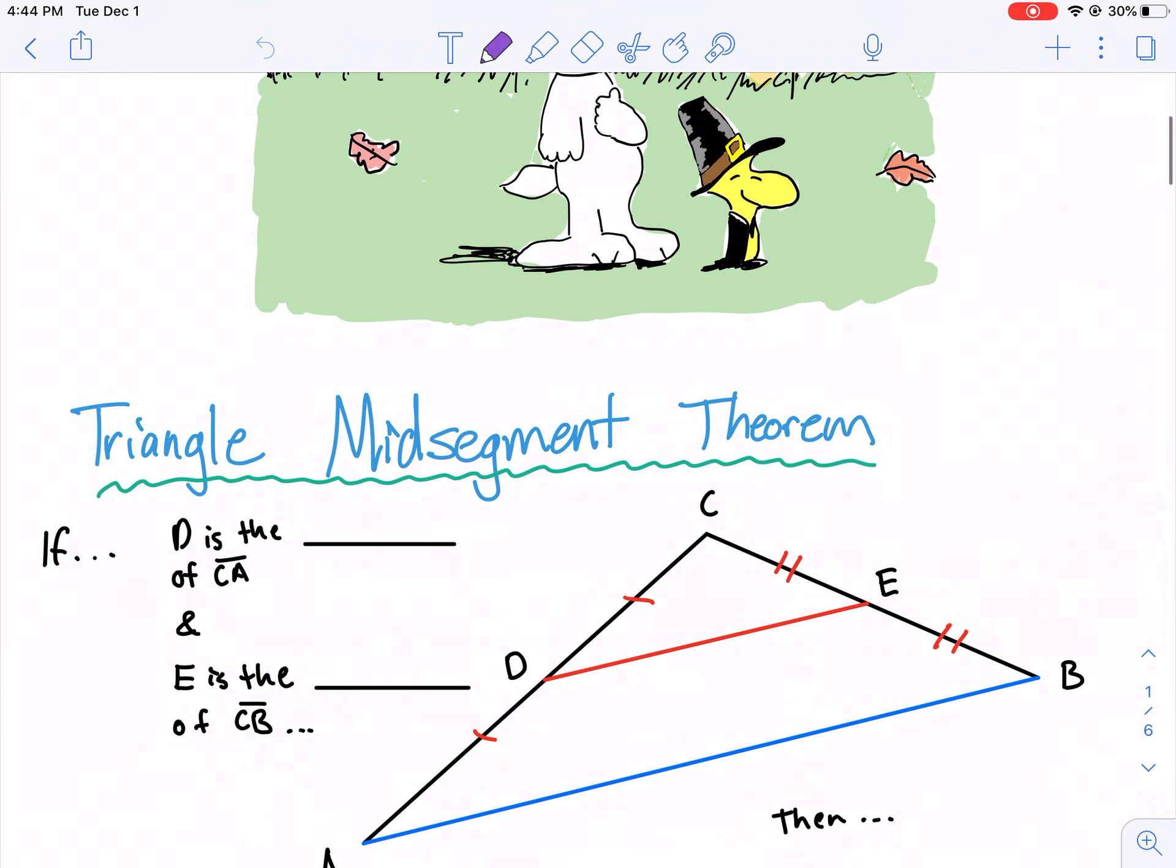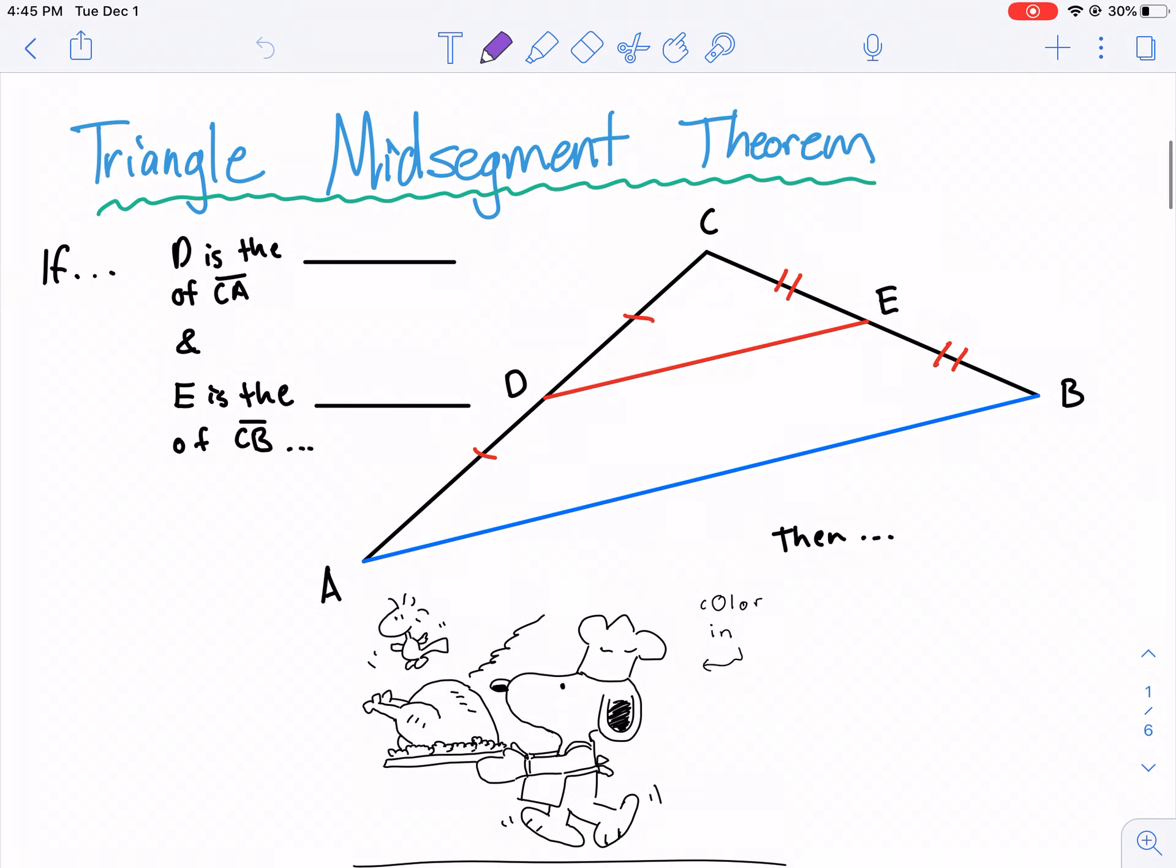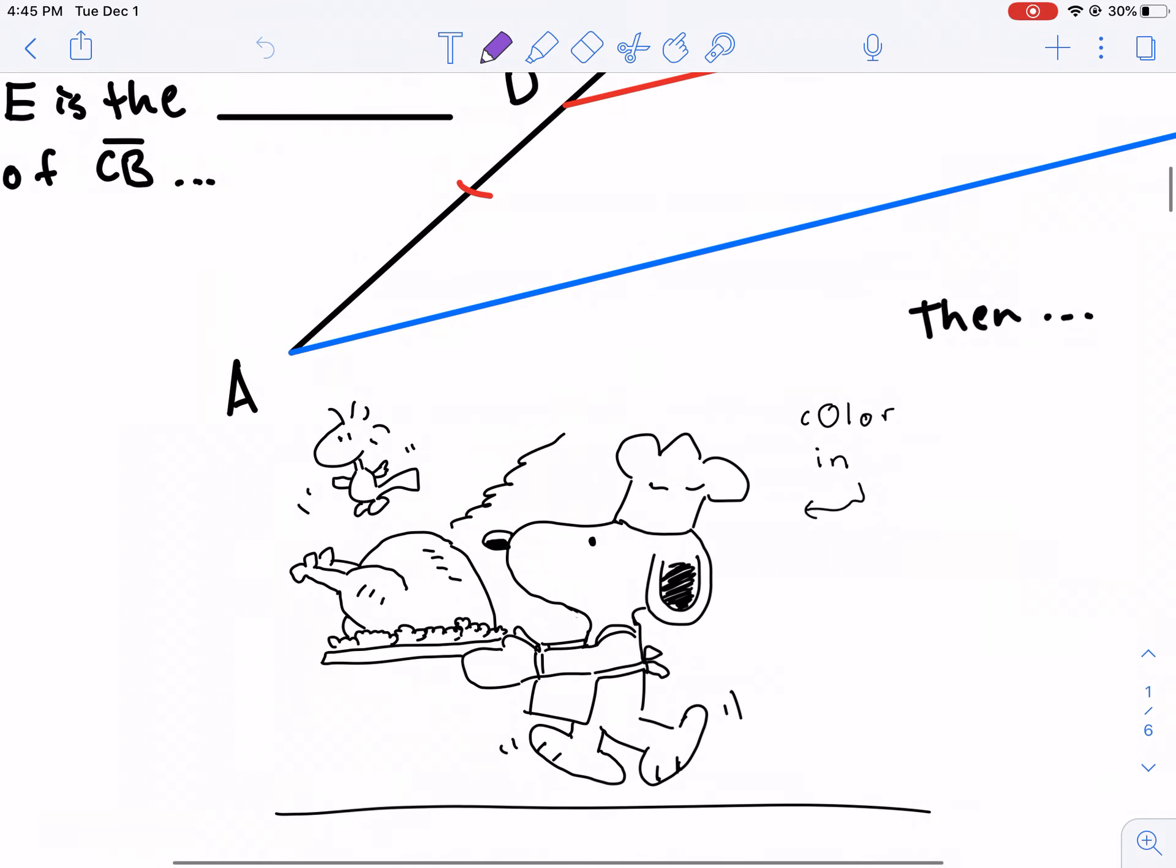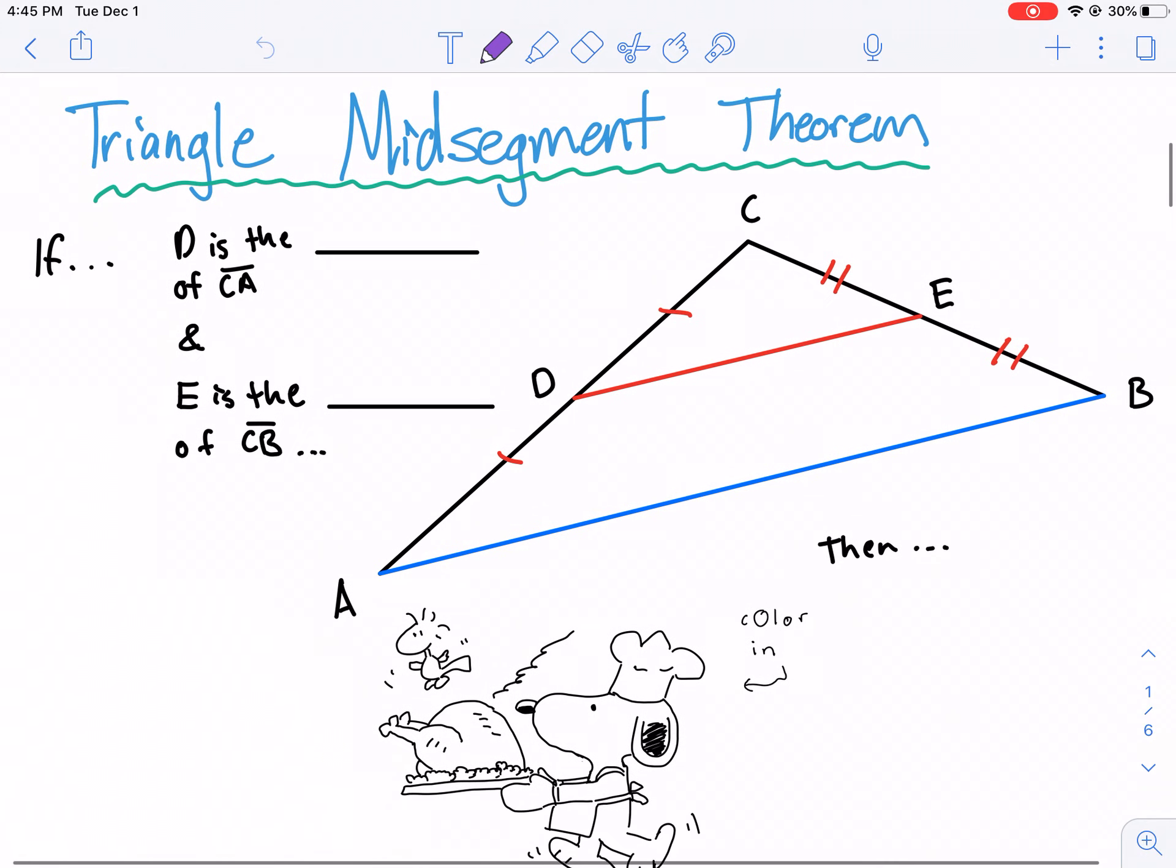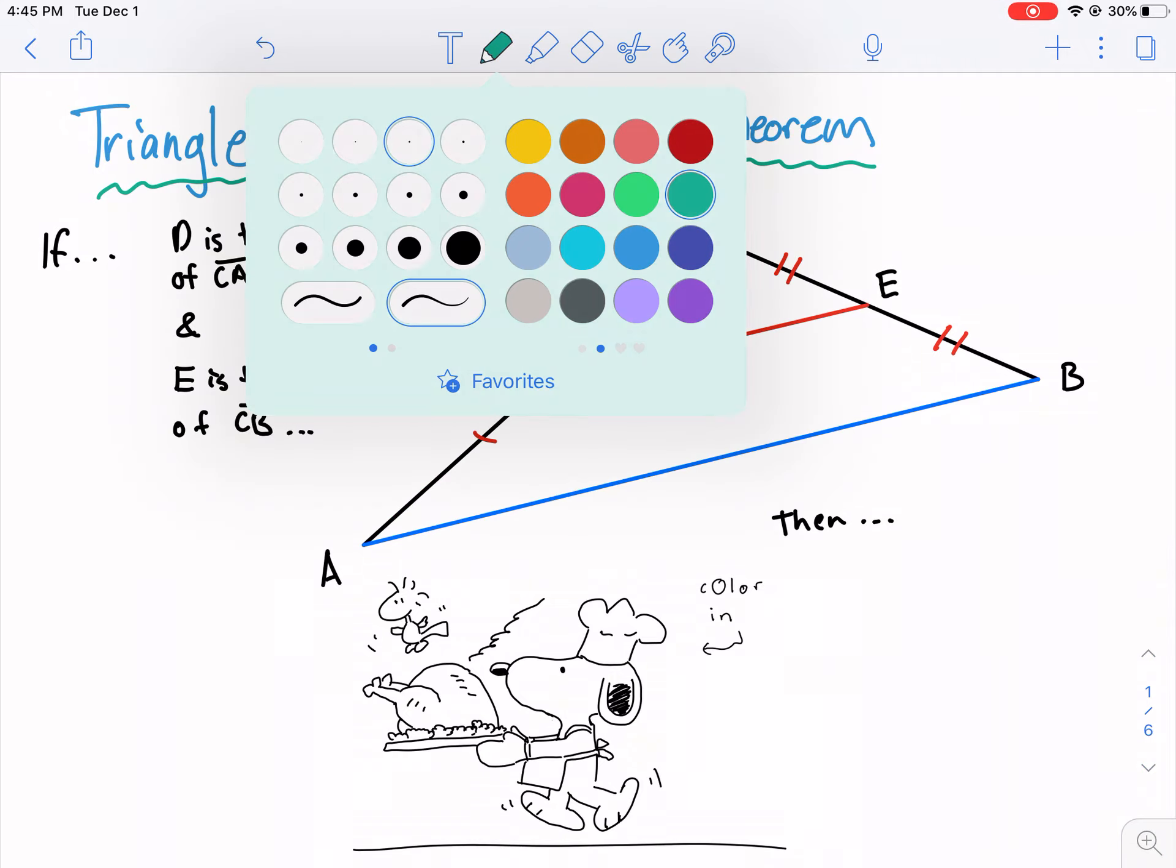Let's jump right into our first concept, the triangle mid-segment theorem. We have a conditional statement: If D is the blank of CA and E is the blank of CB, then blank. Looking at this diagram, we can see that point D is the midpoint because these two segments have been designated to be congruent. So if those segments are congruent, then that means D must be a midpoint.